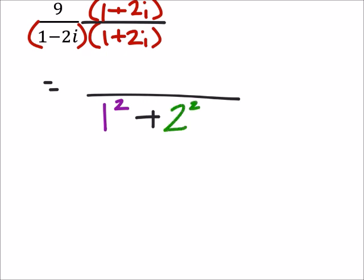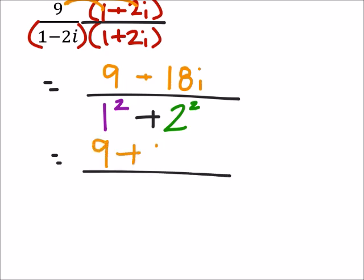Now that doesn't really help us with the numerator, right? I've got to distribute this 9. So 9 times 1 is 9, plus 9 times 2i is 18i. All right, well from this it's not going to change the numerator yet: 9 plus 18i.